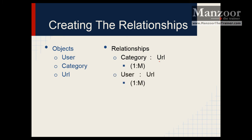Now, why am I not making a relationship between user and category? Because it is meaningless directly. If a user submits a URL, that URL will belong to a certain category, so indirectly there will be a relationship between user and category. So here we get three objects and two relationships. Using these three objects and two relationships I need to design the database. How to design the database we will see in our next video. Thank you very much.